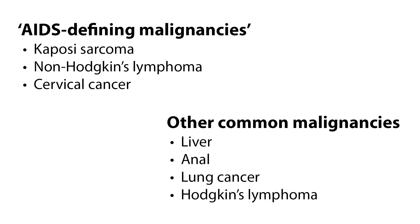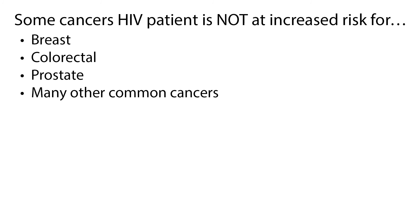Patients with HIV infection have a much higher risk of acquiring certain types of cancer compared to uninfected patients. Due to their weakened immune system, the body's ability to fight infections that may lead to cancer is reduced. There are three cancers known as AIDS-defining malignancies: Kaposi's sarcoma, non-Hodgkin's lymphoma, and cervical cancer. Other common malignancies include liver, anal, and lung cancer, and Hodgkin's lymphoma. HIV patients are not at increased risk for breast, colorectal, prostate, and many other common cancers, so general screening guidelines should be followed.